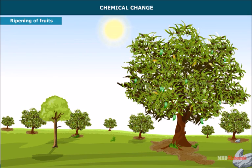Another example of chemical change is ripening of fruits. The green color of raw mangoes changes into yellow due to chemical changes.